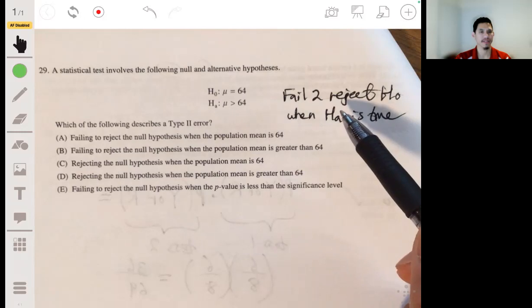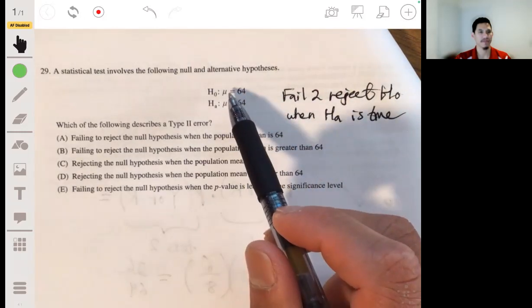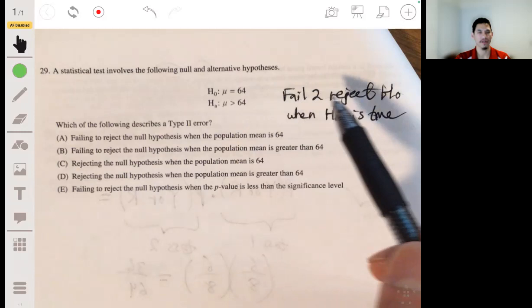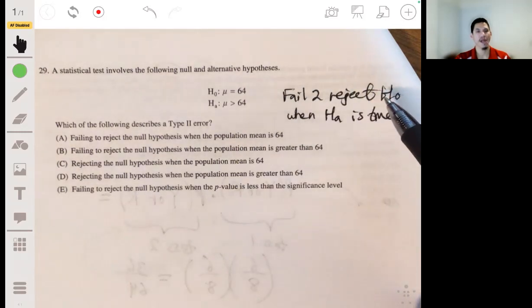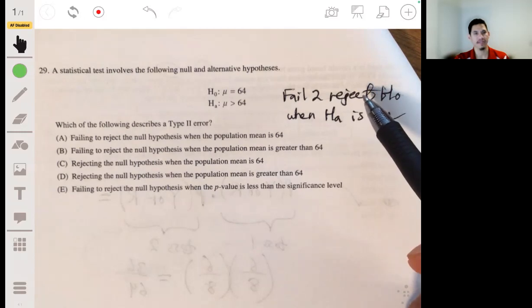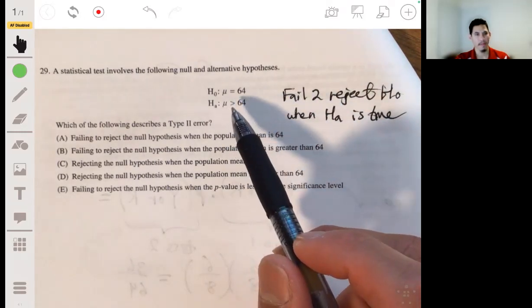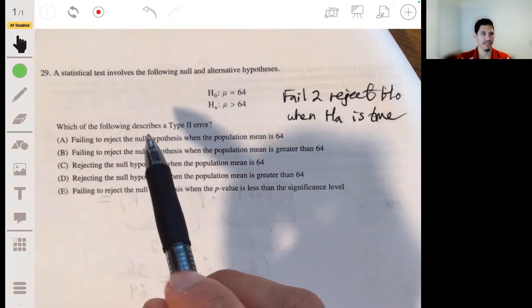Failing to reject the null hypothesis when the alternative is true. So the null hypothesis is that the mean is 64 and the alternative is that it's more than 64. So that means we basically believe that the mean is 64 when it's actually greater.